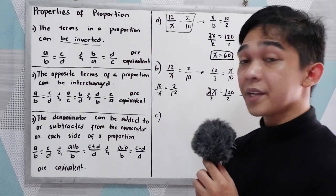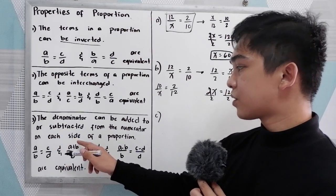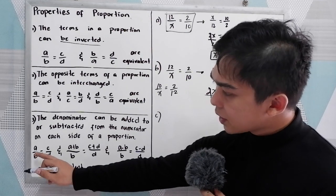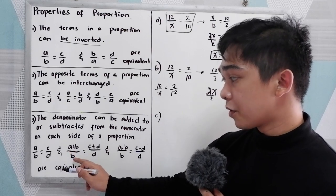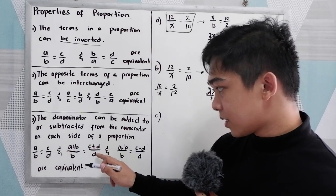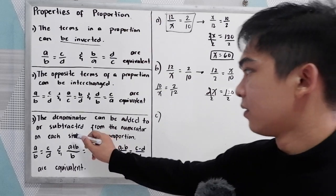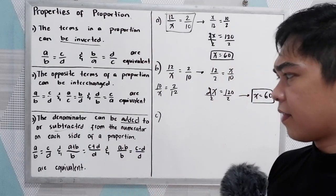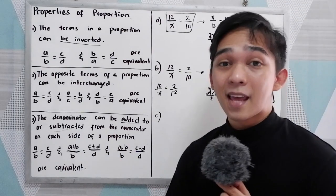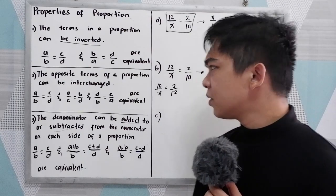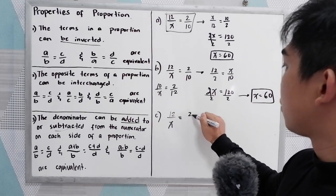Now let us proceed to property number three: the denominator can be added or subtracted from the numerator on each side of the proportion. If A over B equals C over D, that is also equal to A plus B over B equals C plus D over D. You simply add D in the numerator on the right side. B and D must not equal zero.